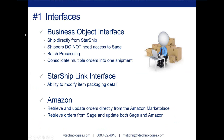Starship now has two different interfaces you can use with the Sage product line. We have our business object interface, which allows your shippers to ship directly from Starship — they will not need access into Sage. This option is good if you're running out of licenses for Sage; you can free up some by having your shippers use the business object interface.